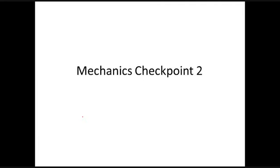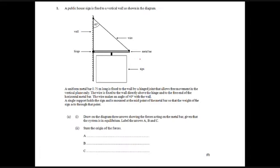OK, this is Mechanics Checkpoint 2, this is about moments. OK, first question is about a pub sign. It's hanging on the wall here, we've got to draw on the forces, label A, B and C, three forces which are acting on this bar.